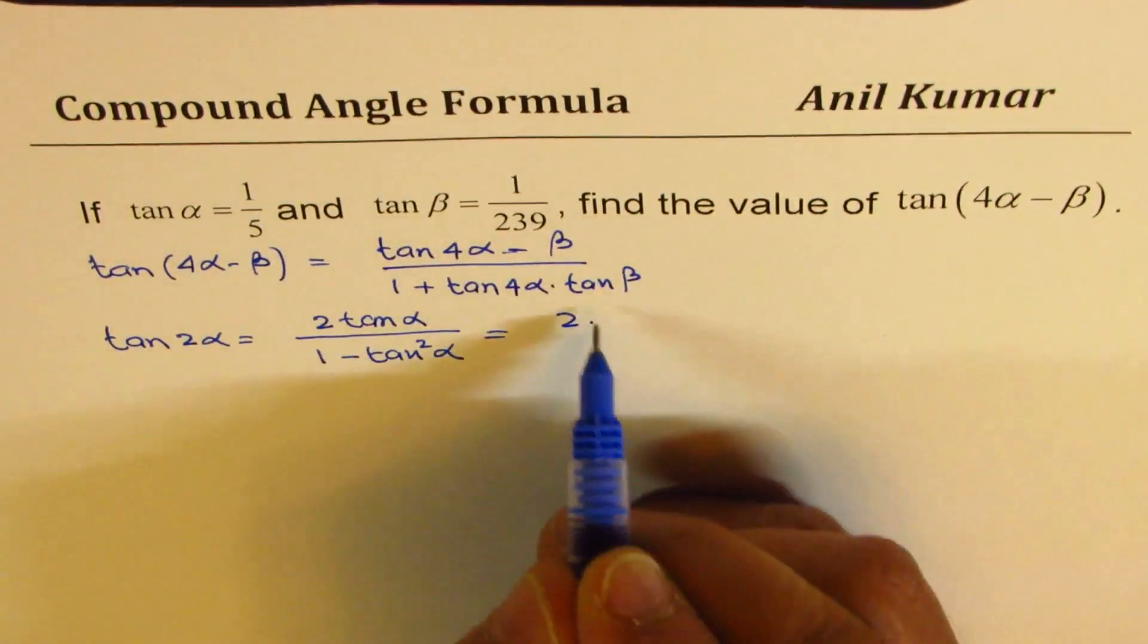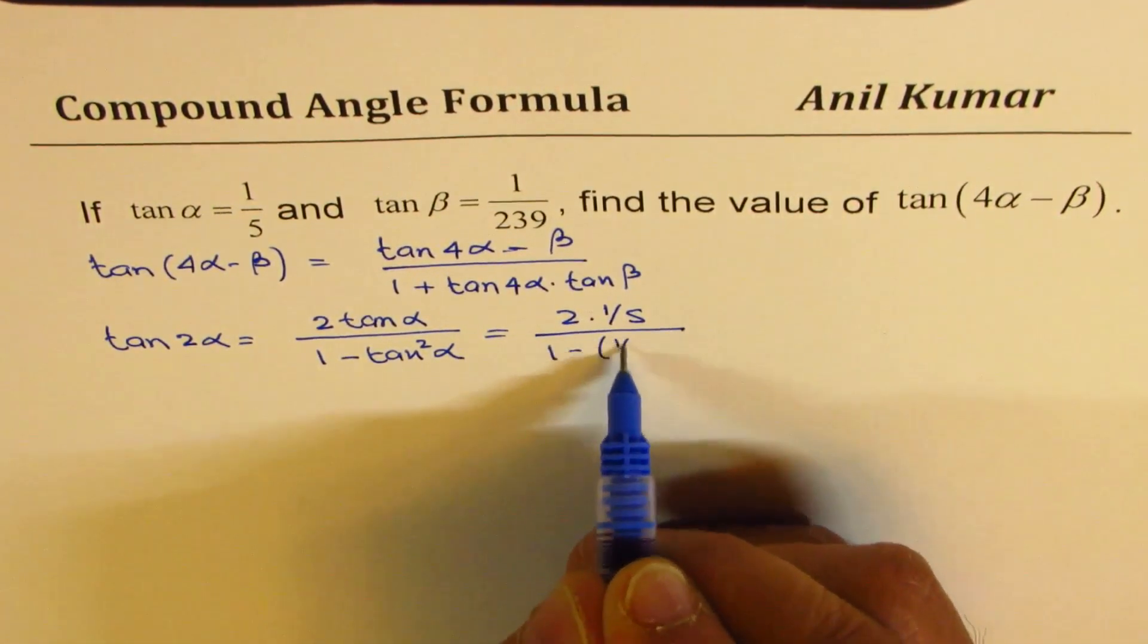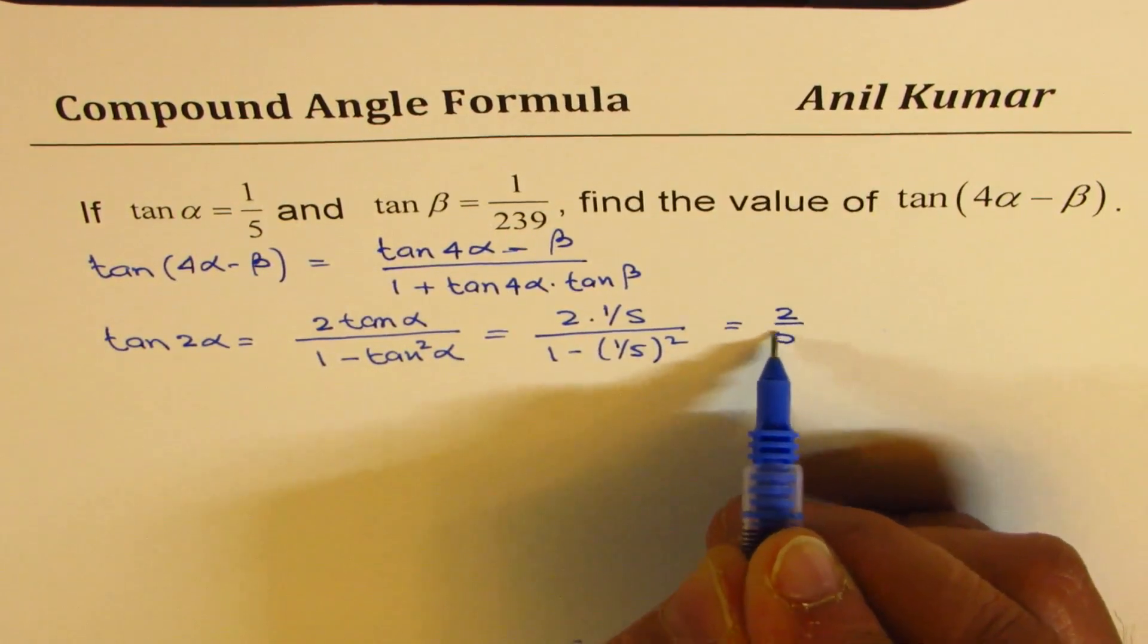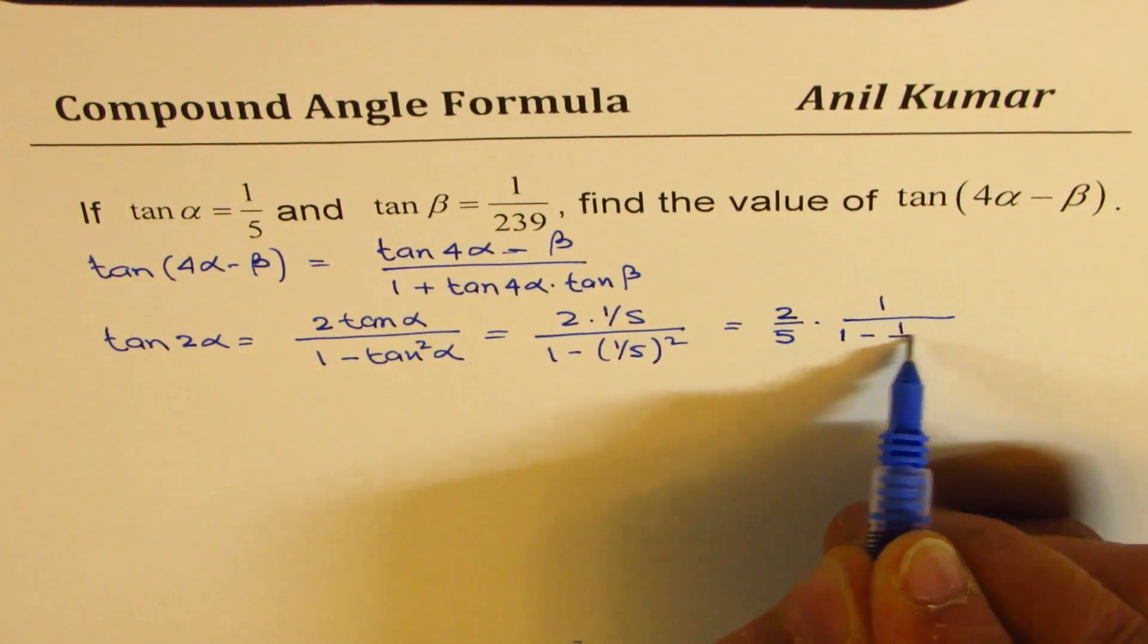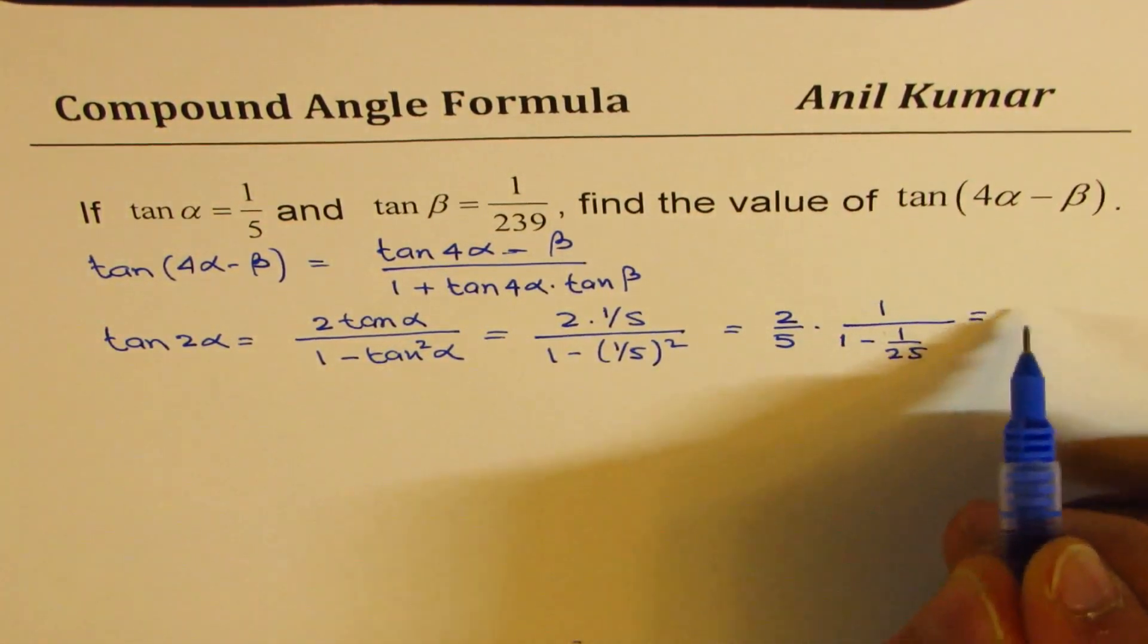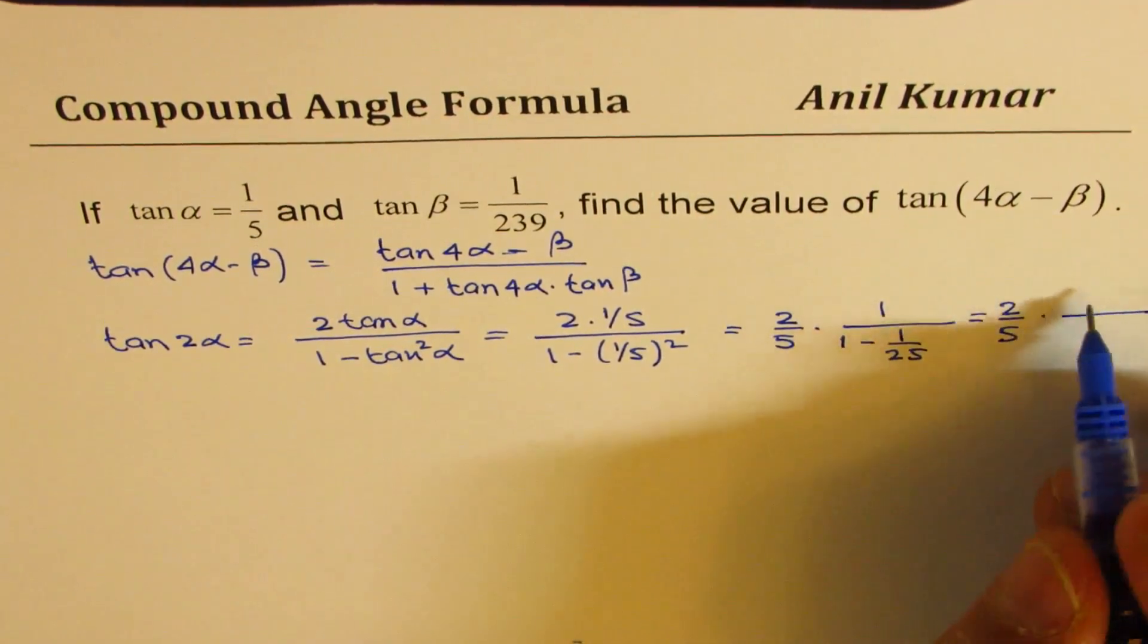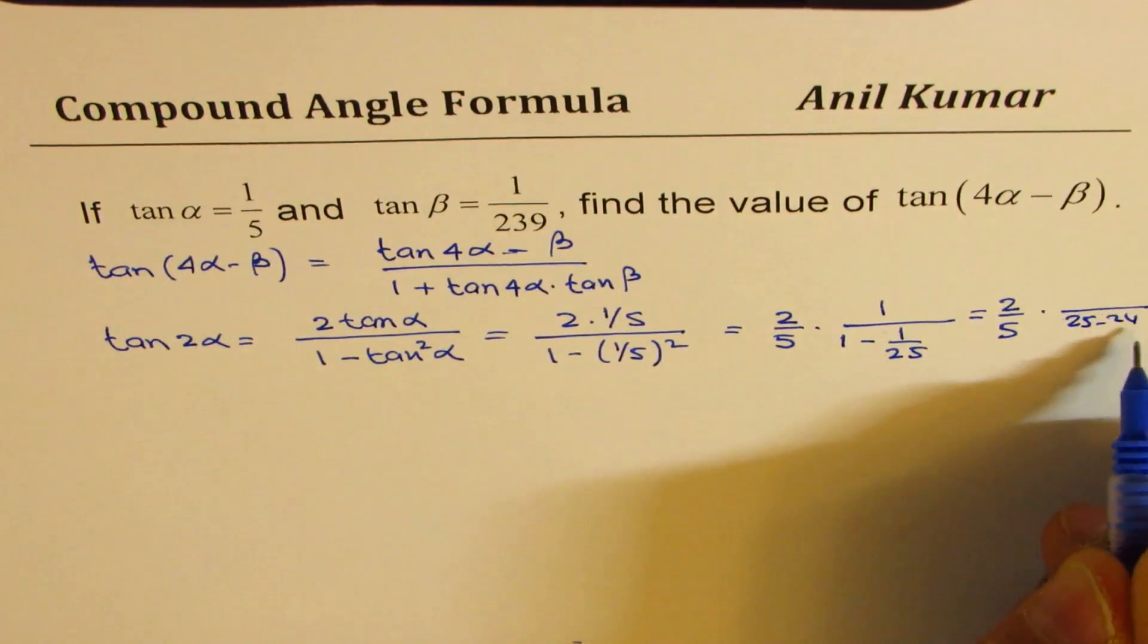So 2 times tan alpha is 1 over 5 divided by 1 minus square of 1 over 5. This could be simplified. So let me write this as 2 over 5. And here we'll write this as 1 over 1 minus 1 over 25. And this could be simplified as 2 over 5 times. This is 25, 25 minus 1. Let's do it in two steps. I'll take it as 25 minus 1, divided by 25.